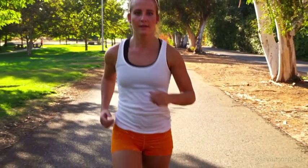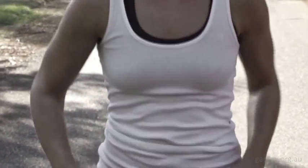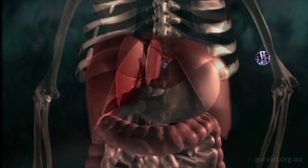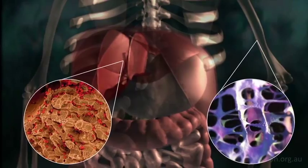Almost every cell in your body contains the same DNA, the same DNA code. So how can cells that contain the same DNA be so different? What makes a bone cell a bone cell, or a liver cell a liver cell?